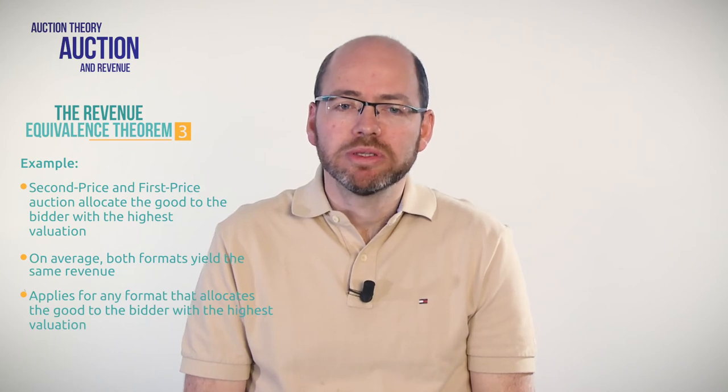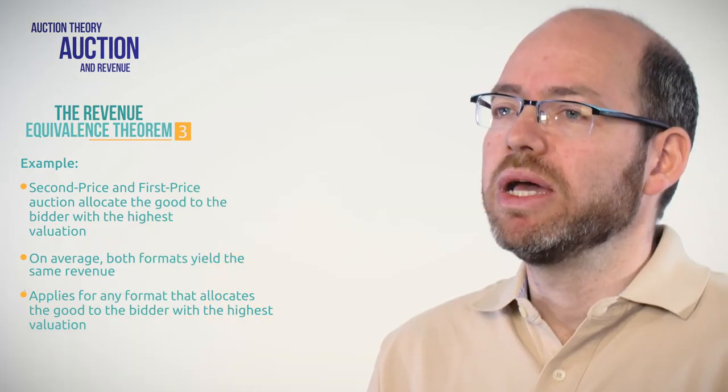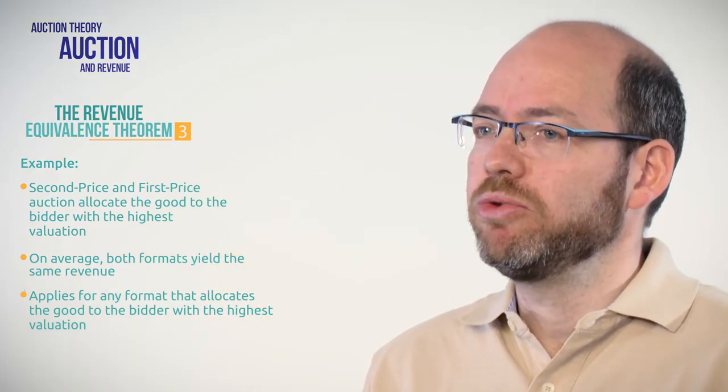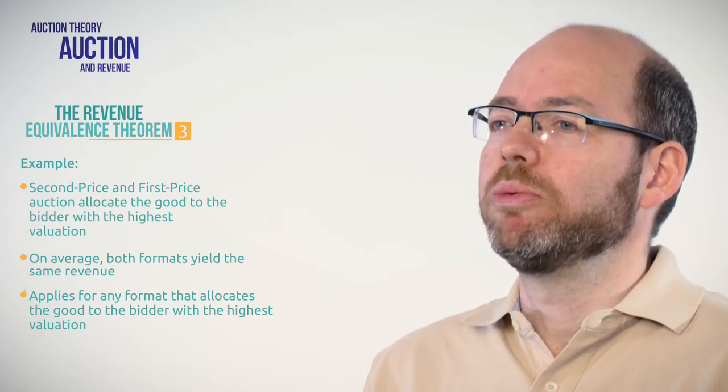Let me illustrate this point with an example. Suppose that the second price auction and the first price auction both always allocate the good for sale to the bidder with the highest valuation for the good. Then, on average, they will provide the same revenue for the seller, when some nice assumptions are satisfied. We can go even further: if you design any auction format with very strange rules, and these auction formats always allocate the good to the bidder with the highest valuation, then these auction formats will give, on average, the same revenue to the seller.